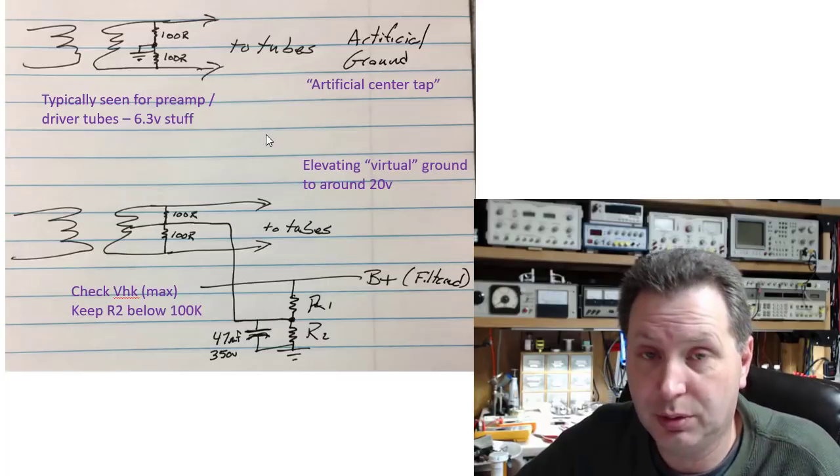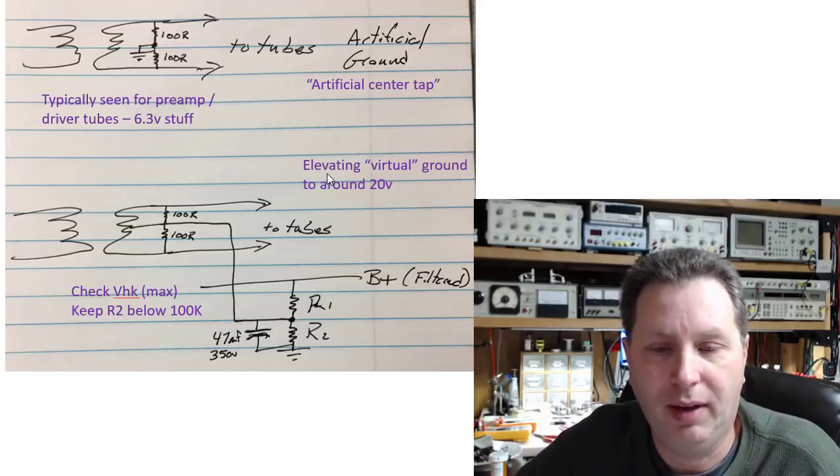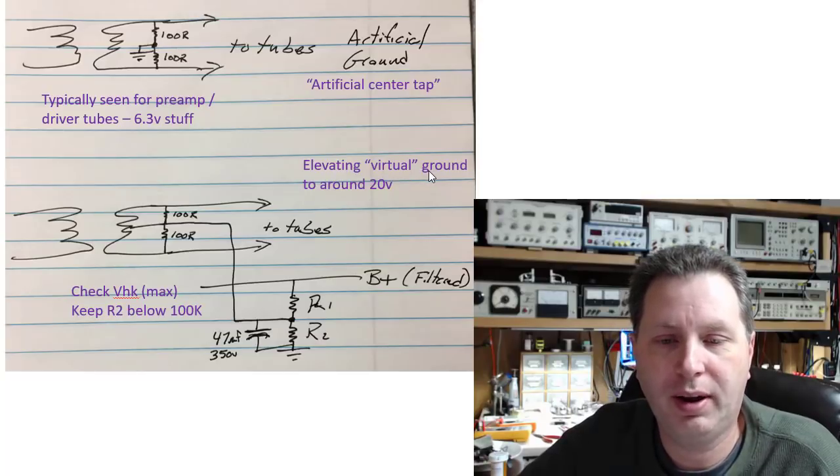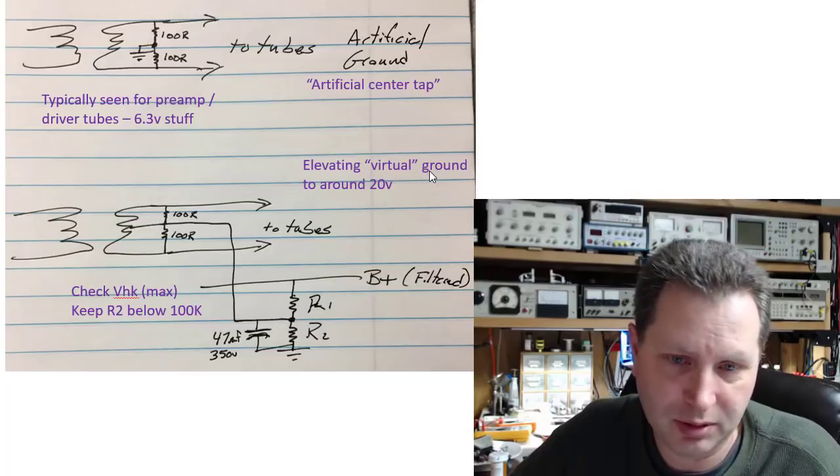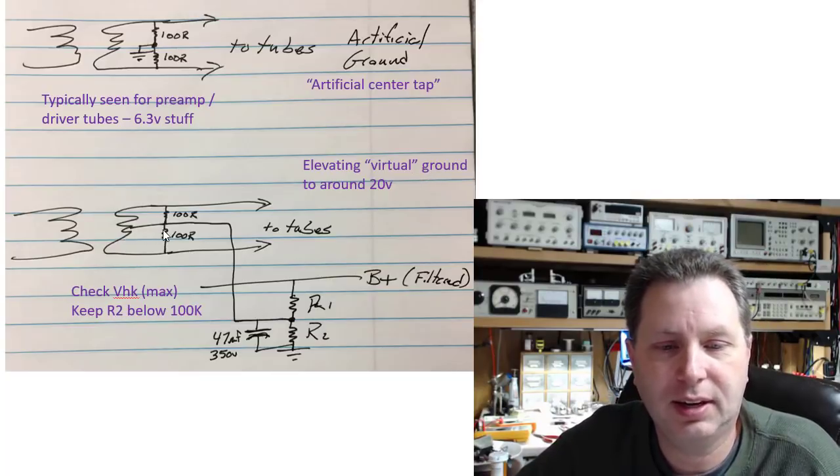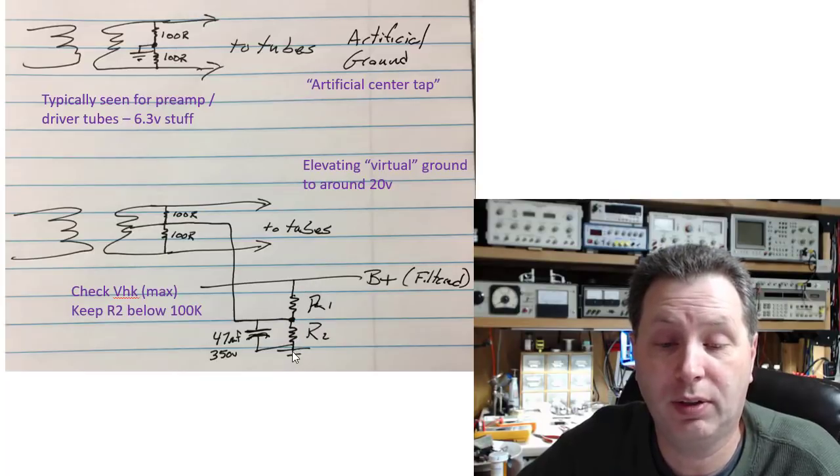The next thing that I see used about as much is what I would call elevating the virtual ground to around 20 volts. Sometimes you see it 30 volts. But what they do here is you take that same little center tap point right here, and you bring it down and you tie it via just a little resistor divider network here that you would build.